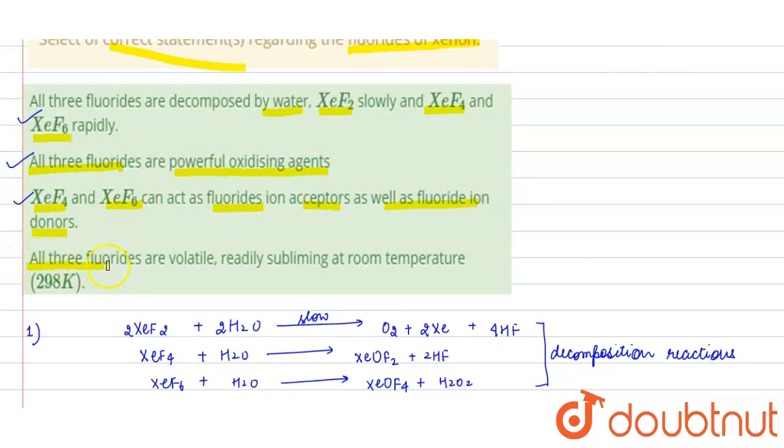Fourth statement: all three fluorides are volatile, readily subliming at room temperature (298K). This is also correct - it's a physical property of xenon fluorides. All four statements are true and correct.